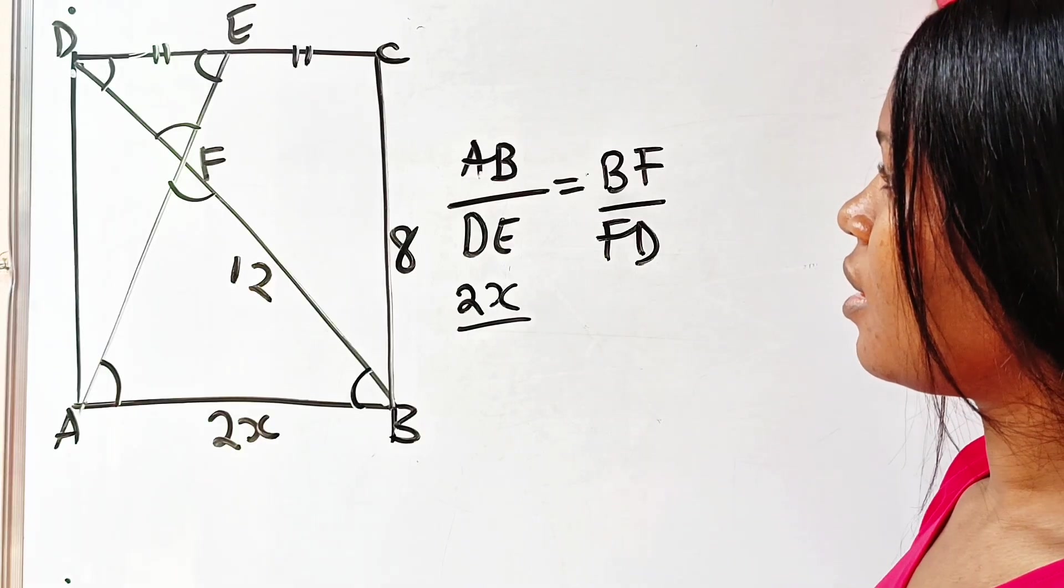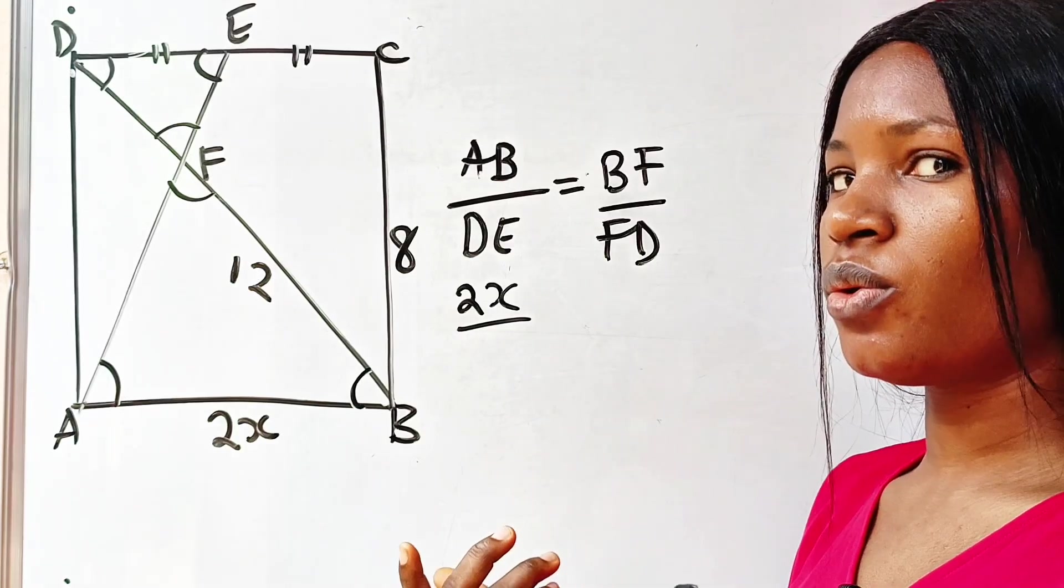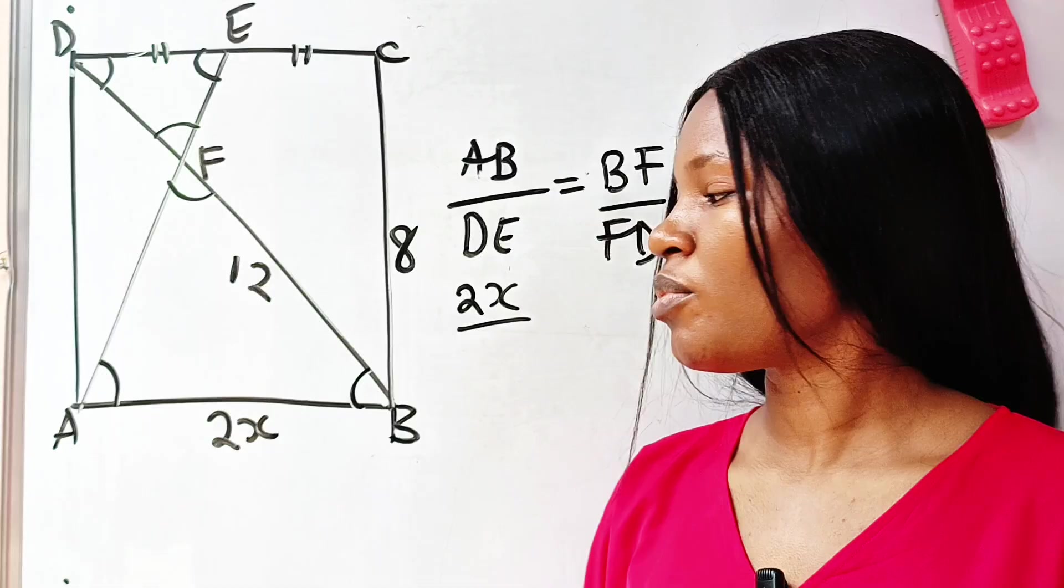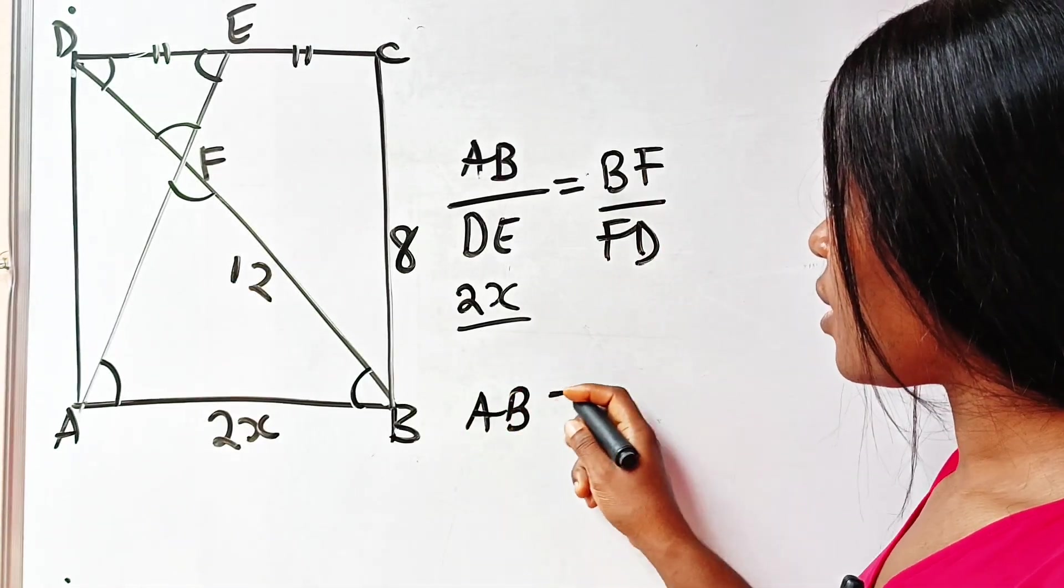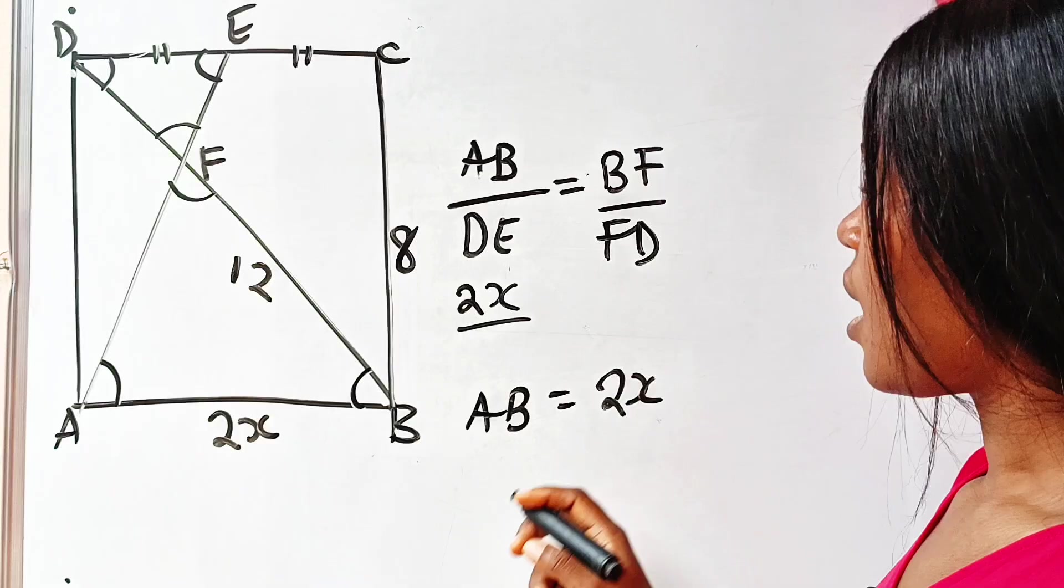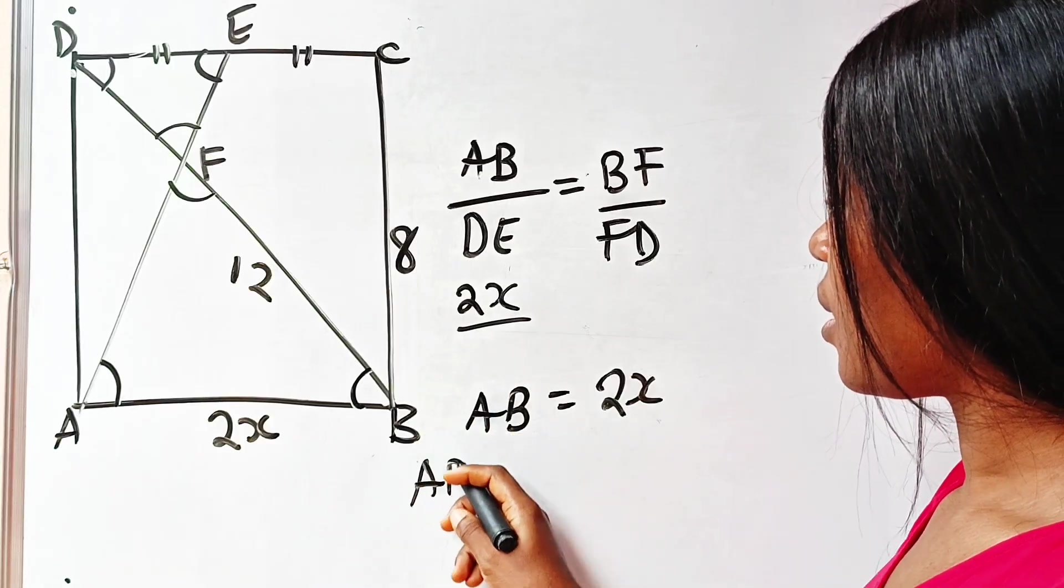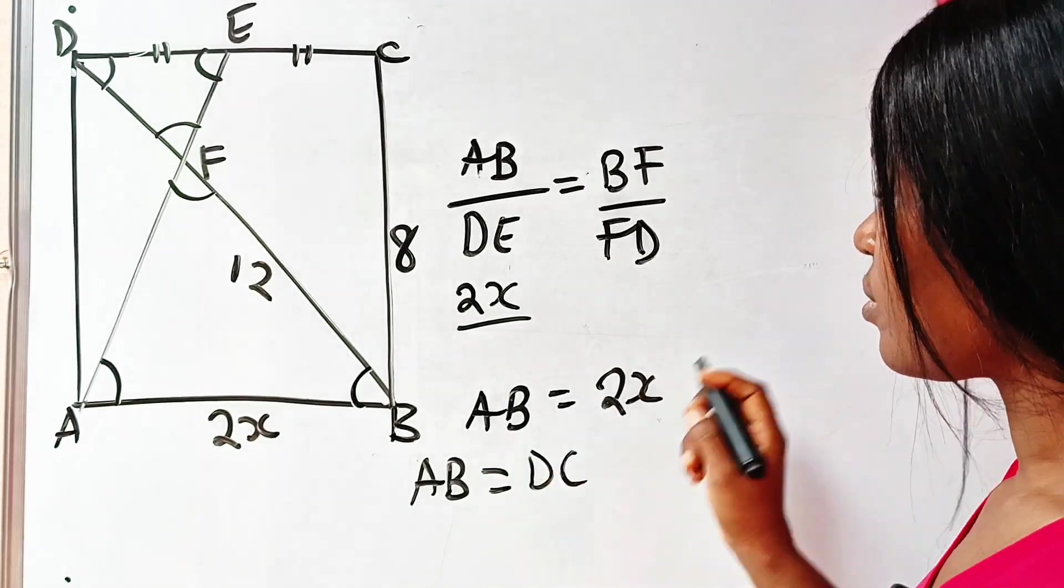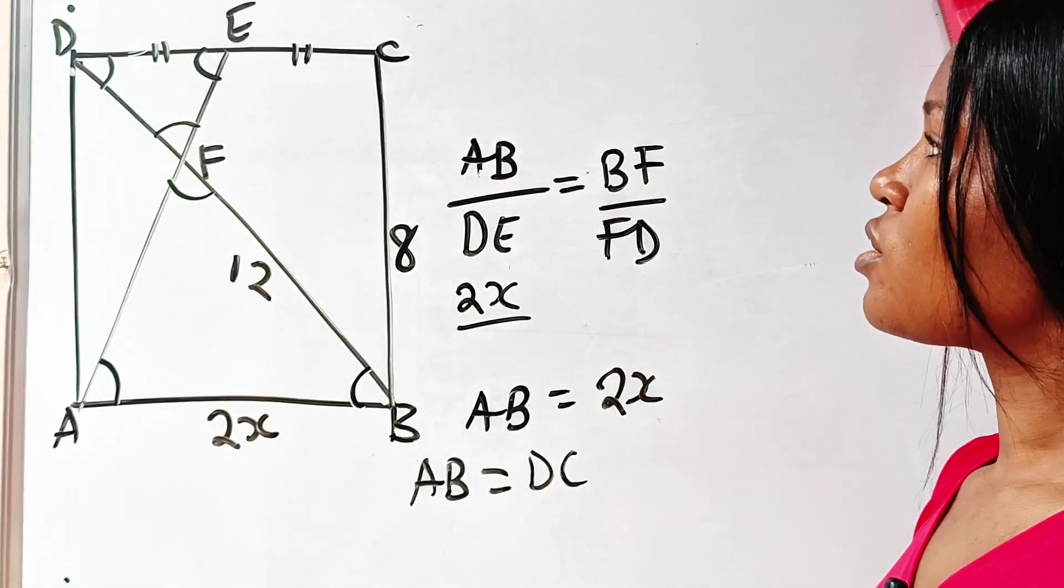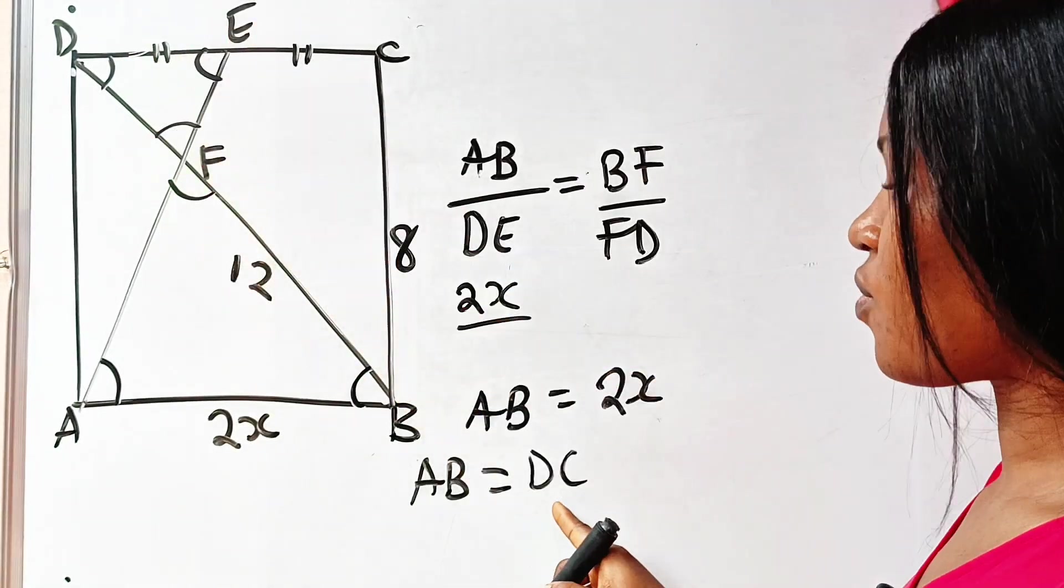Now AB is 2x and DE is unknown. Not unknown anyway, because we are told that AB is equal to 2x, and we know that AB should be equal to DC.